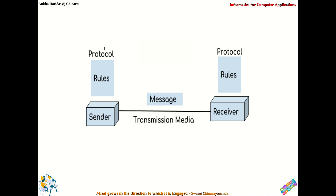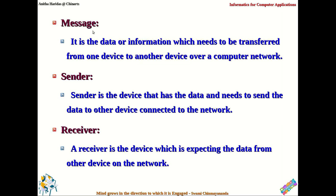In any computer network, there will be a sender sending some message and a receiver will be receiving the message. For this particular communication, you need a transmission media, which can be wired or can be a wireless connection. Apart from that, you will have some set of rules and standards for sharing this message. The first component is message — message is nothing but data or information, whichever you want to transfer from one device to another device over a computer network.